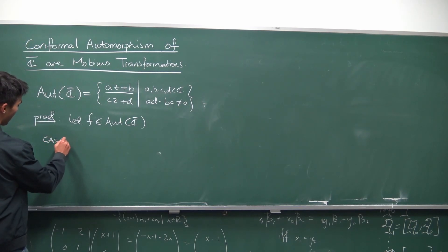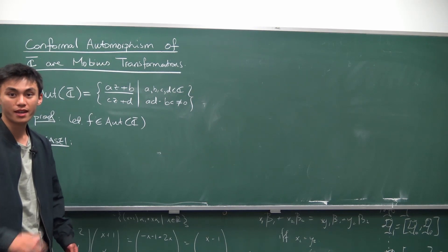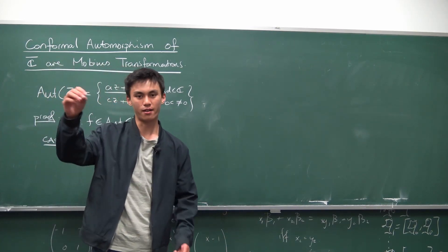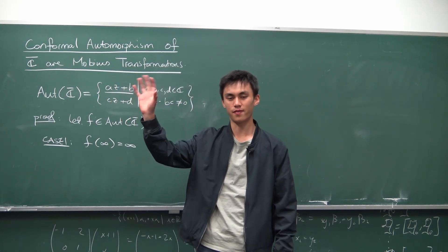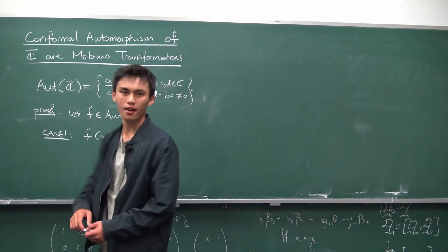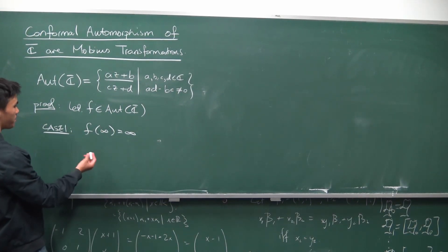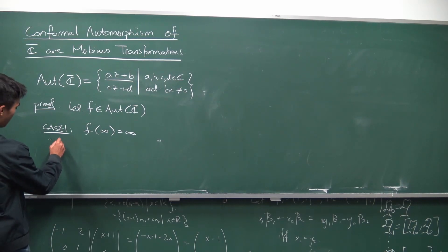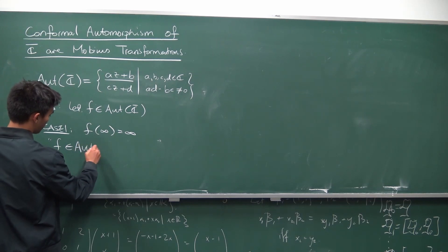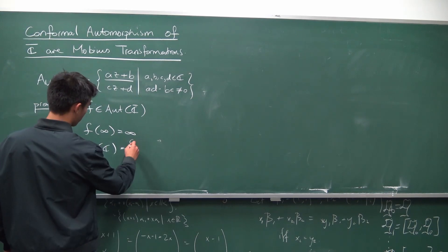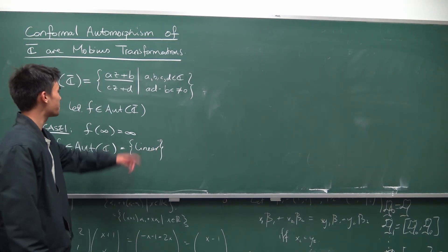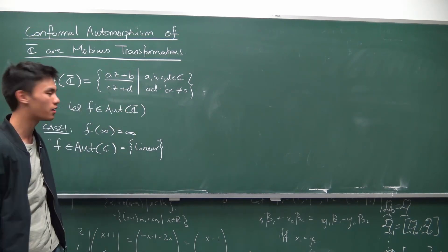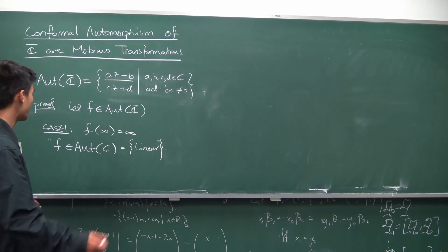Case one is when the point at infinity remains fixed — so f(∞) = ∞. You're allowed to scale things and rotate things, but the point at infinity on the Riemann sphere doesn't change. If infinity is a fixed point, basically all you're looking at is automorphisms of C instead, because you don't really care about the point at infinity anymore. From a previous video, we know the automorphisms of C are just the set of all linear maps. Linear maps are Möbius transformations — in particular, if you take c = 0 and d = 1, this is definitely part of the set we have.